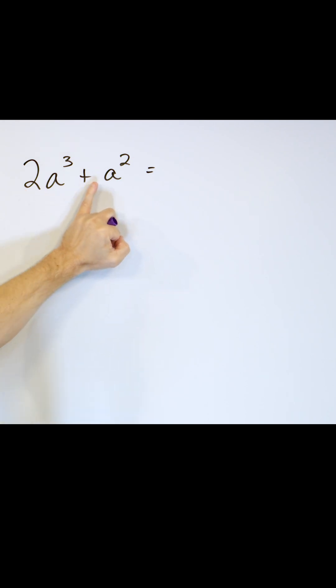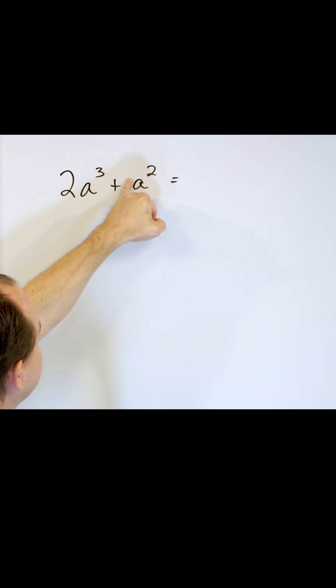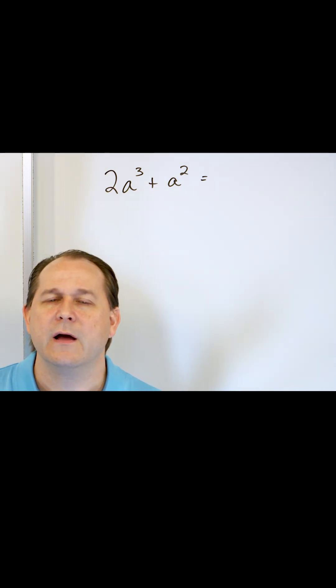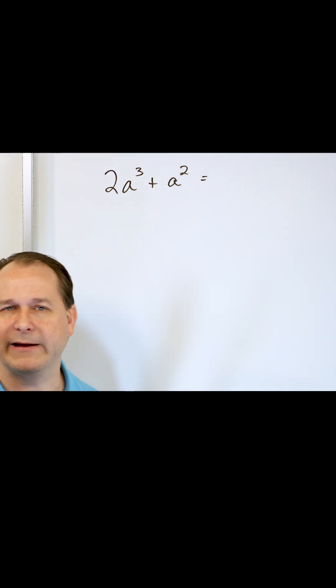Well, I do have a two here, but there's just an invisible one in front here, a coefficient of one, so I cannot pull that two out. I want to, of course I want to, but there's no two in this term, so I can't pull the two out.